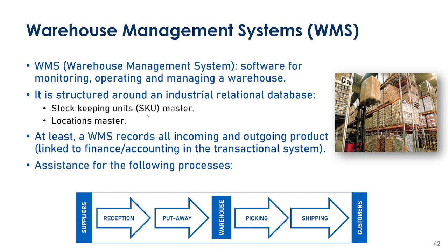A Stock Keeping Unit (SKU) is a way for us to store the different references or items we work with. For example, if you are storing cans of Coke, you can have a six-pack, a 12-pack, or a 24-pack. Although in all three cases you're storing cans, you have three different SKUs because they need different room on the shelves, have a different number of items, and you need to keep track of the features of every reference.